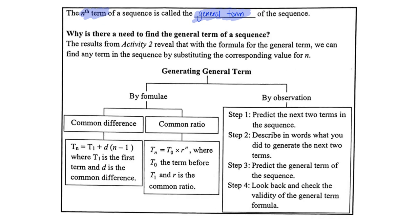And why is there a need to find the general term from the results of the activities we have done previously? With this formula for the general term, we could actually find any term just by substituting the value of n.